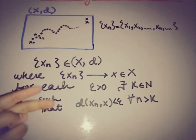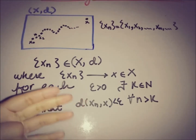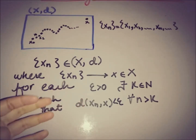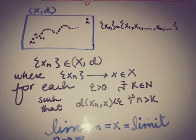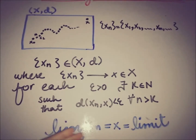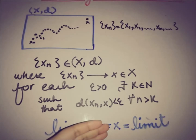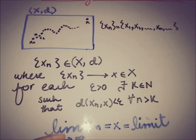Here x is the limit of the sequence xn, so we can write: the limit of xn as n approaches infinity equals x, where x is the limit of the sequence.